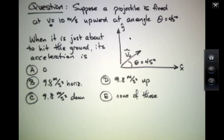What is its acceleration when it's just about to hit the ground? Is it A) 0, B) 9.8 meters per second squared horizontal, C) 9.8 meters per second squared vertically down, D) 9.8 meters per second squared pointing up, or E) none of these?